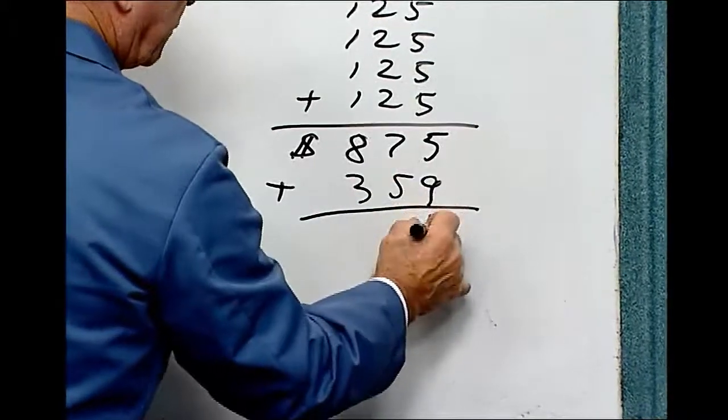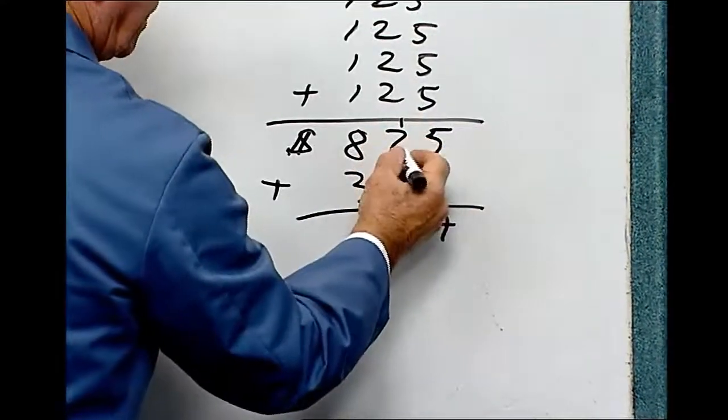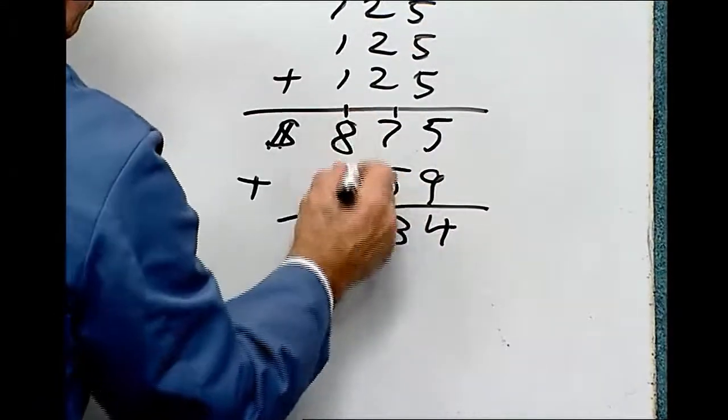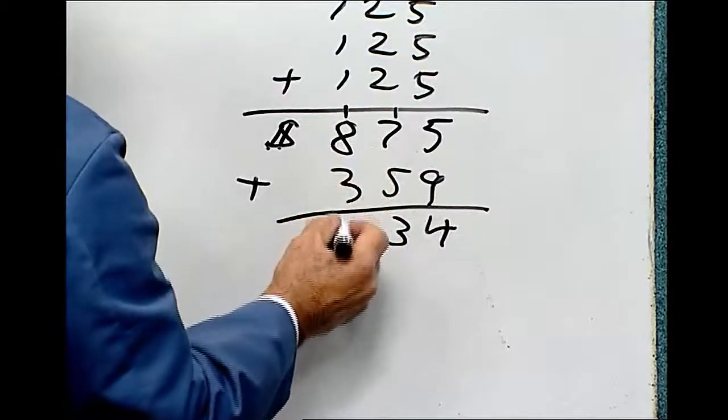So 9 plus 5 is 14. 1 plus 7 is 8, plus 5 is 13. 1 plus 8 is 9, plus 3 is 12.